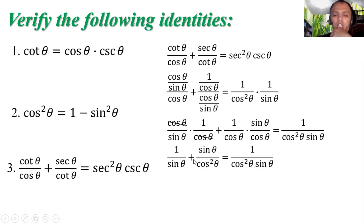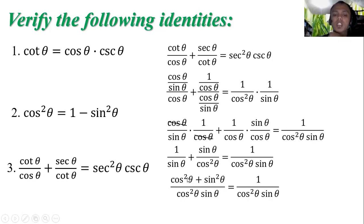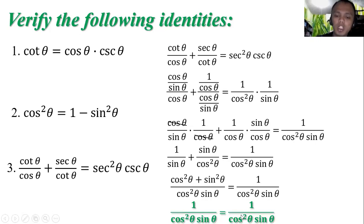Then 1 over cosine squared theta multiplied by 1 over sine theta is 1 over cosine squared theta sine theta. After cancelling, we get 1 over sine theta plus sine theta over cosine squared theta. Getting the LCD of cosine squared theta sine theta: cosine squared theta times 1 plus sin squared theta equals cosine squared theta plus sine squared theta over cosine squared theta sine theta. Since cosine squared theta plus sine squared theta equals 1, we have 1 over cosine squared theta sine theta equal to 1 over cosine squared theta sine theta.